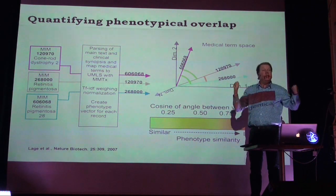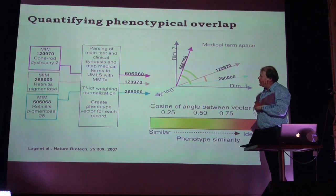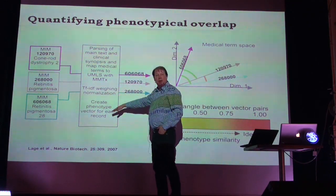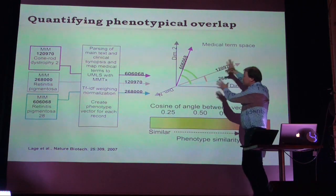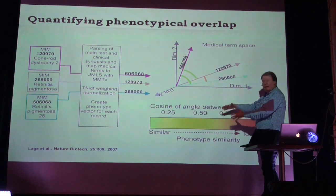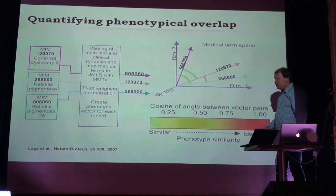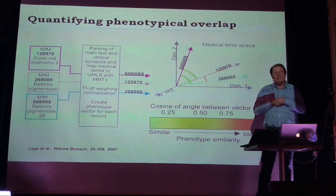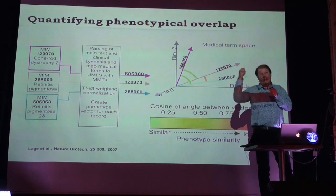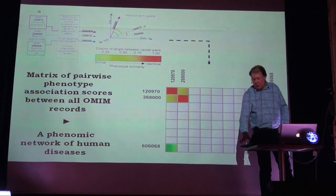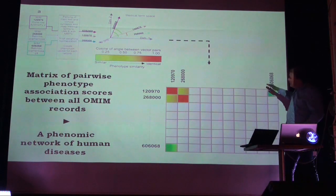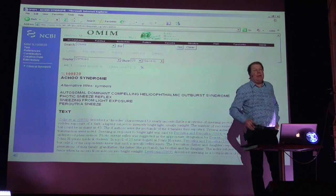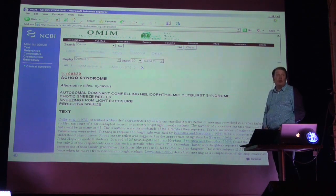We measure the angle between disease vectors, giving us a system that quantifies the overlap between two diseases. We can use that to search for genes related to a specific disease. We start with texts, use Google-like methods, and suddenly all these different diseases are in one space where we can say the overlap between two diseases on a scale from 0 to 1 is maybe 0.3. We can assess how likely a gene is involved in more than one disease and compute distances across all diseases to quantify phenotypic overlap.